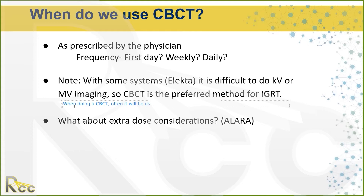Here's why KV imaging matters alongside cone beam: especially when you're first getting used to cone beam, you're going to get lost. You can be on the wrong vertebral body depending on how good your setup marks are. If you take a quick KV pair — AP and lateral — you're going to match up the bony anatomy and get into the region. You'll spend a lot less time struggling in the cone beam. Get your bony anatomy matched first with KV, then take the cone beam — you'll be right where you need to be and can focus on soft tissue.